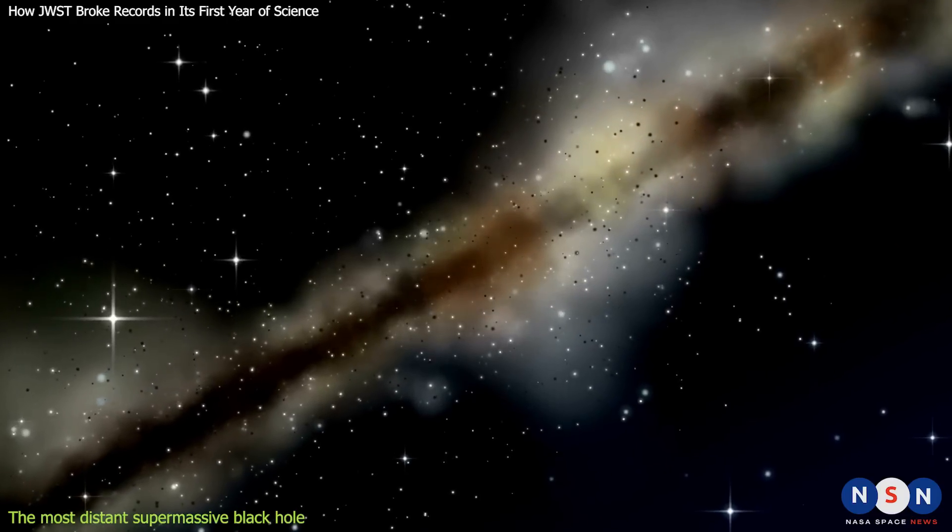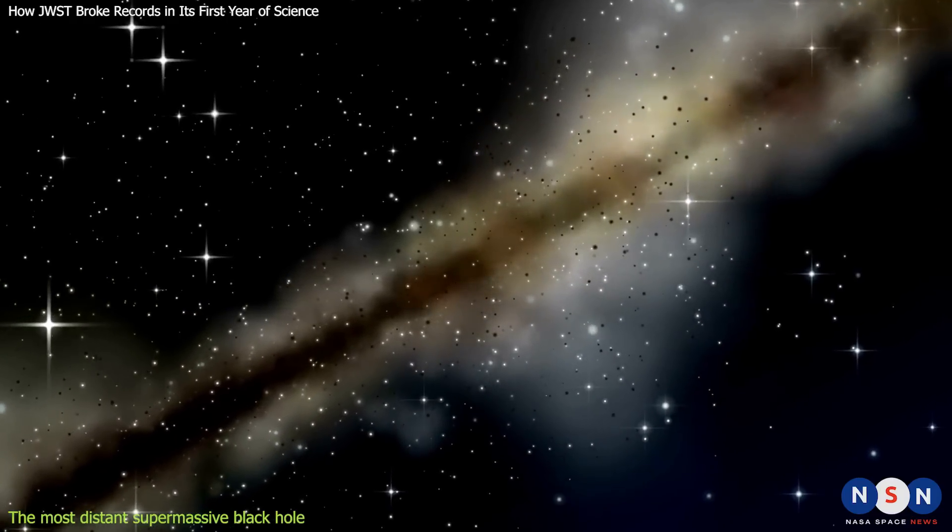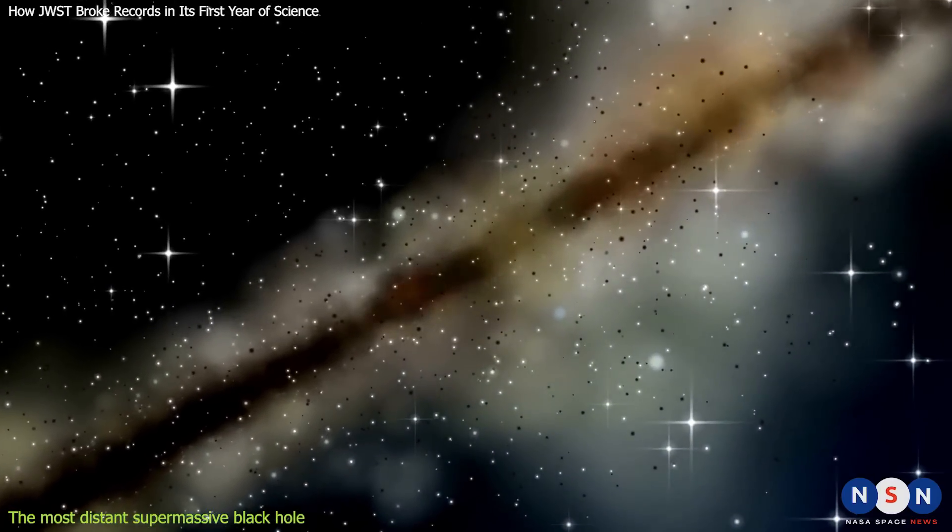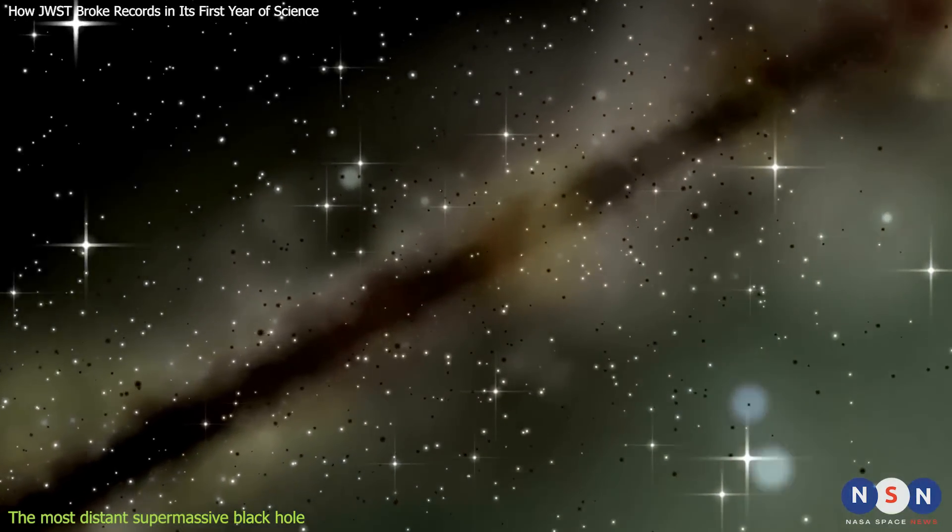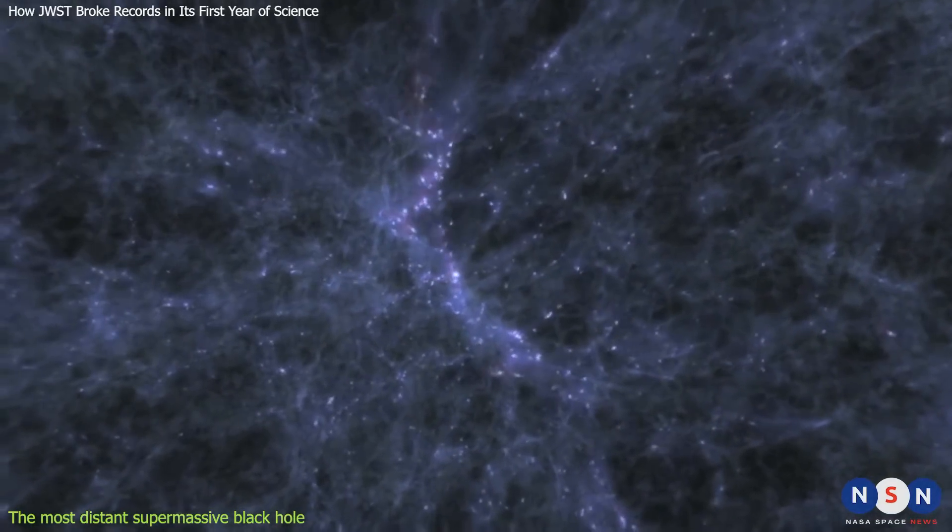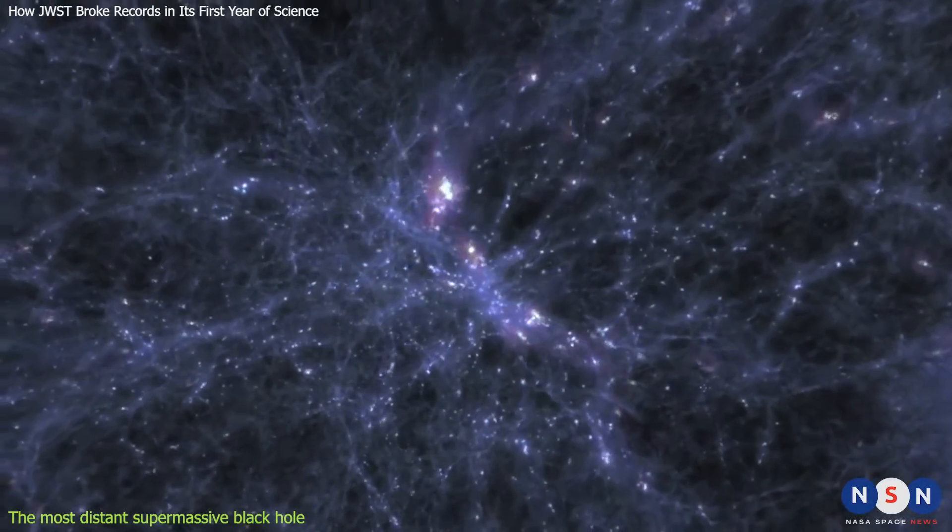They found that the galaxy is forming stars at a rate of about 100 solar masses per year, which is very high compared to other galaxies at that time. But how did this black hole become so massive so early in the history of the universe?